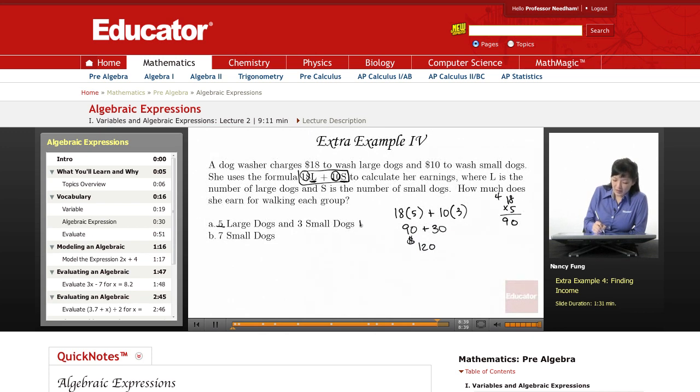So for this first scenario, A, this dog washer makes $120. Let's go on to the next scenario.